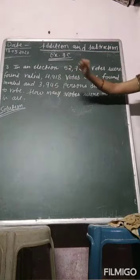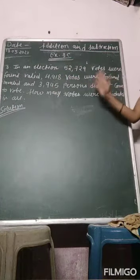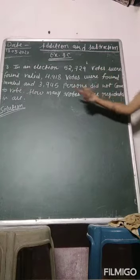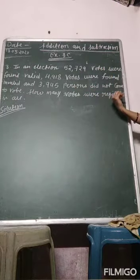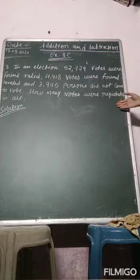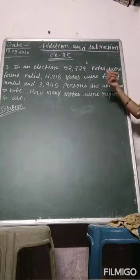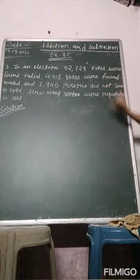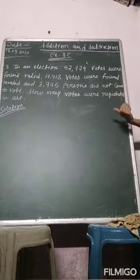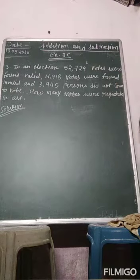And 3,945 persons did not come to vote. And how many votes were registered in all. So for finding how many votes were registered in all, we add these three: valid votes, invalid votes, and persons who did not come to vote.